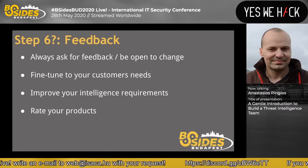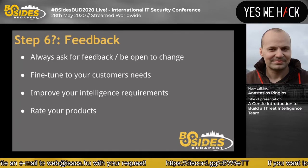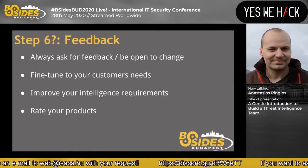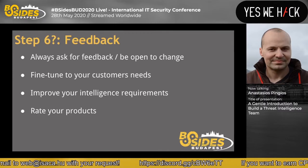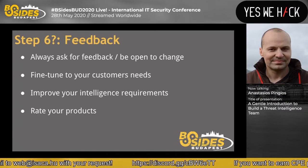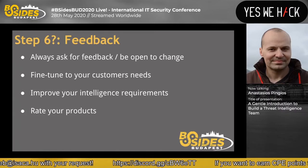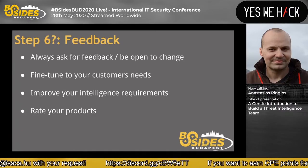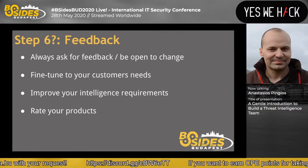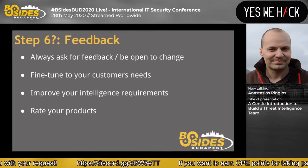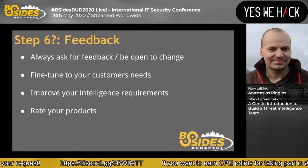That covers the intelligence cycle apart from feedback. There is no official step six, but after you have shared your intelligence you shouldn't treat it as a black box — it's not done. Look for improvements. Ask for feedback, especially in the beginning, and see whether what you provided answered your customers' questions. If not, start adapting. If it included a lot of information they didn't care about, reduce it next time. That feedback step is going to drive the whole improvement of the team.